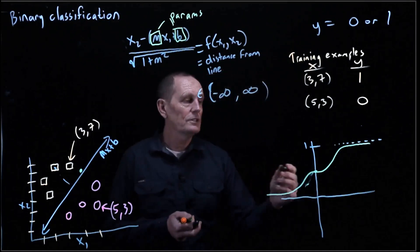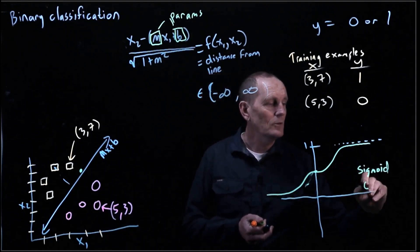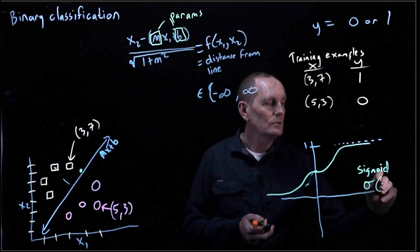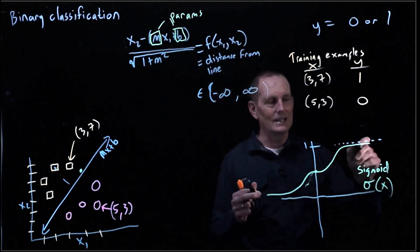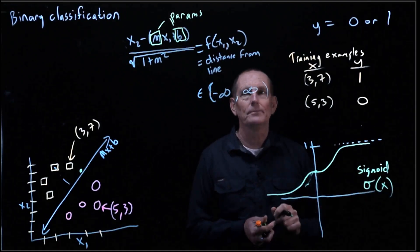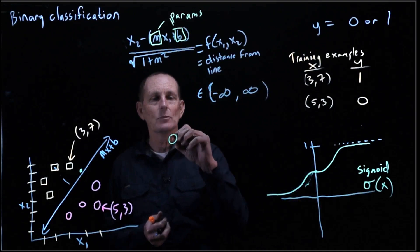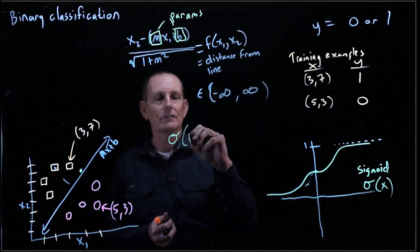So this function is called a sigmoid, and it's represented with a sigma. It's called sigmoid because this looks like it's an elongated s. So s for sigma or sigmoid.